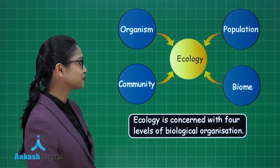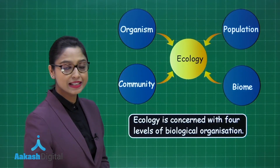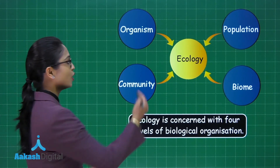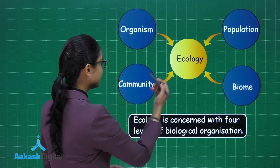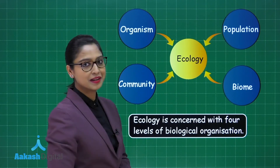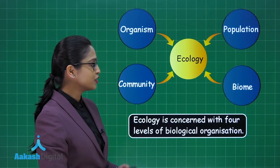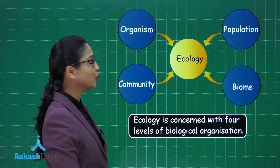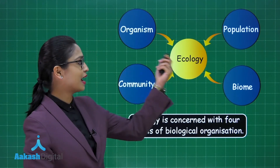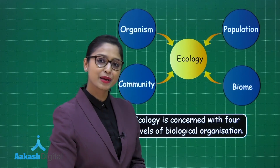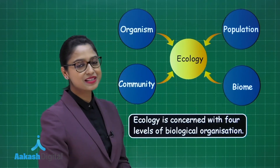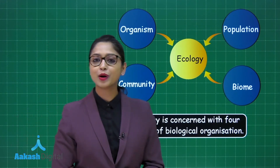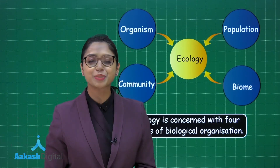Ecology deals at four levels: organism, population, community, and biome. Basically, ecology is concerned with all these four levels, but in our first chapter we will be dealing with organism and population — hence the name of the chapter is 'Organisms and Population.' That's all for this segment. I hope whatever we discussed is clear to you.